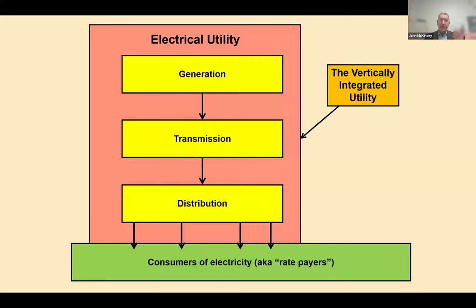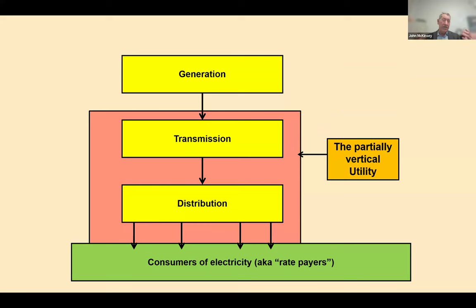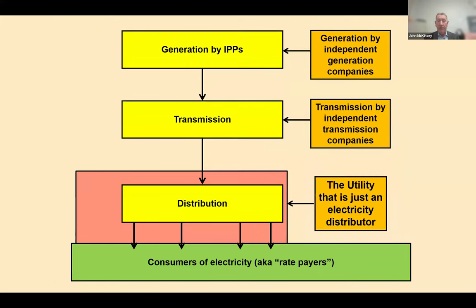The vertically integrated utility — regulated by the CPUC if it's an IOU — owned generation, transmission, and distribution and was our model. Where we're headed is the partially vertical utility that has gone out of the generation business entirely, with generation made up entirely of competitive IPPs bidding to sell electricity. We can take that even further — a movement happening more slowly — gradually removing the utility from operating the grid itself, leaving them as just an electricity distributor delivering electricity to rate payers.